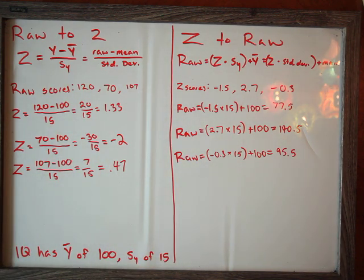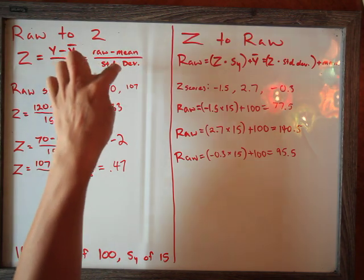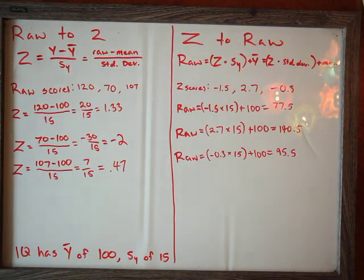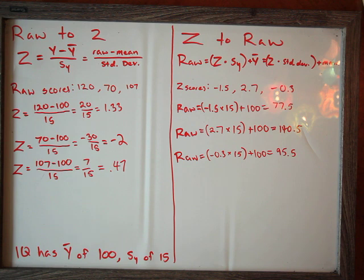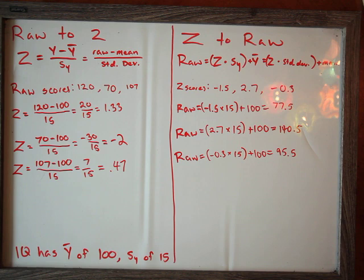All you need to know is the mean and the standard deviation of a data set, and you can convert from any raw score to any z-score and from any z-score to any raw score. That's all there is to converting raw and z-scores. Hope this helps.